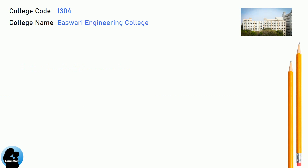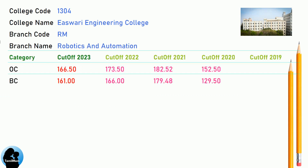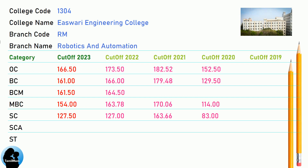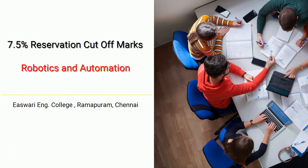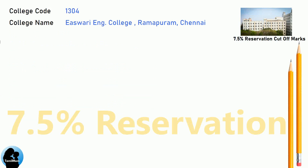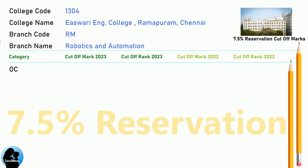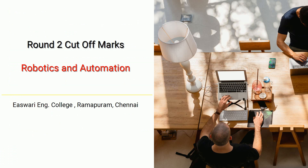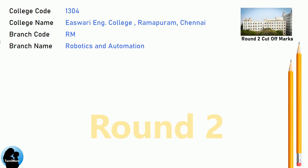DNA Cut-Off for Eshwari Engineering College in Robotics and Automation. DNA 7.5 Reservation Cut-Off for Eshwari Engineering College in Robotics and Automation. DNA 8.5 Reservation Cut-Off for Eshwari Engineering College in Robotics and Automation.